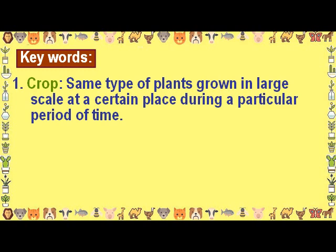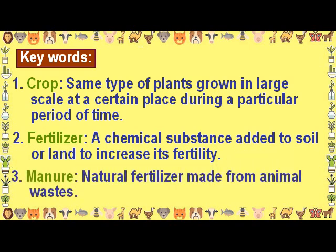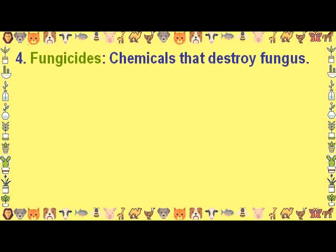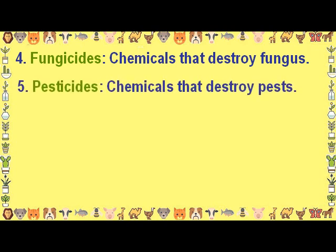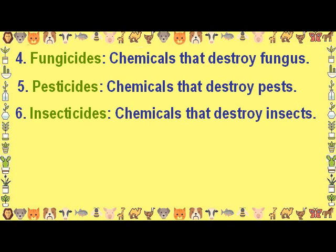Keywords. Crop: same type of plants grown in large scale at a certain place during a particular period of time. Fertilizer: a chemical substance added to soil or land to increase its fertility. Manure: natural fertilizer made from animal wastes. Fungicides: chemicals that destroy fungus. Pesticides: chemicals that destroy pests. Insecticides: chemicals that destroy insects.